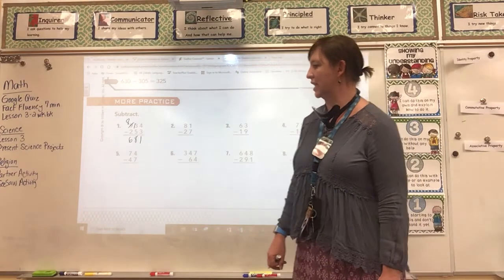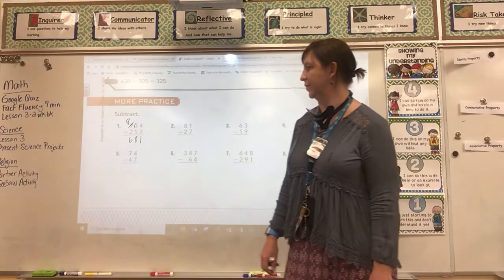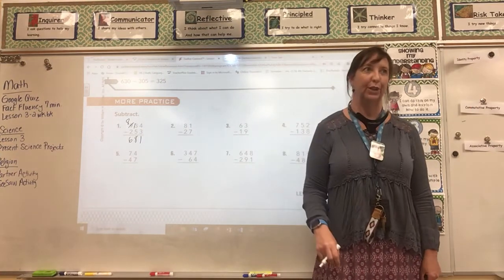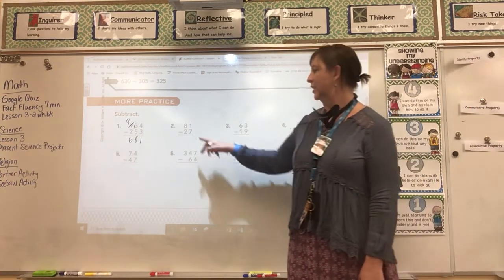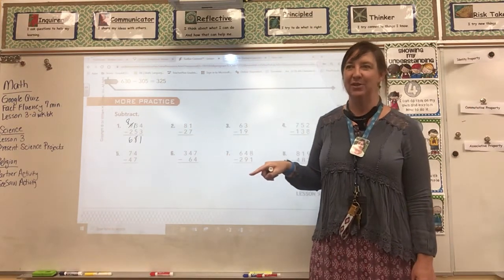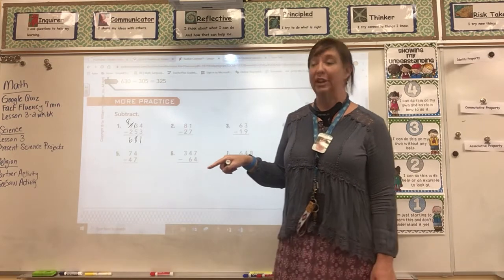So we're on problem 8-2, 3-2. I'm going to walk you through this page, and then the rest you're going to work on independently. So when we have 1 on top and we can't subtract, what do we have to do? We have to borrow or regroup.